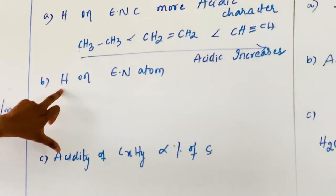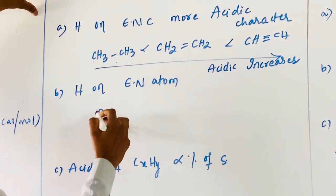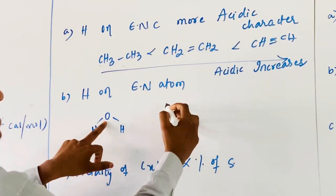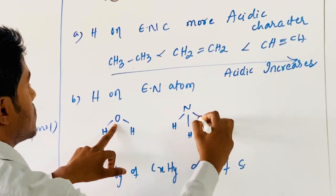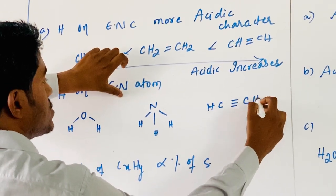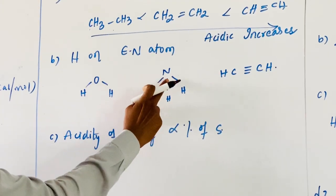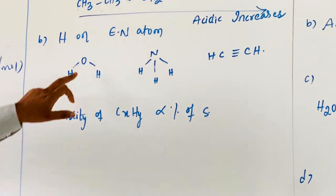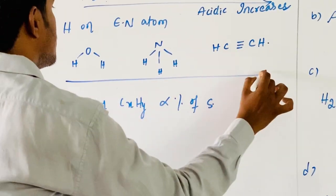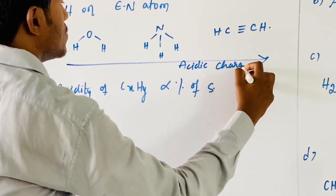Now considering hydrogen and the electronegative atom other than carbon — for example, the water molecule H2O, where the central atom is oxygen; ammonia NH3; and acetylene. Coming to the electronegativity of oxygen, nitrogen, and carbon: oxygen is greater than nitrogen, which is greater than carbon. Therefore acidity character increases in that order.